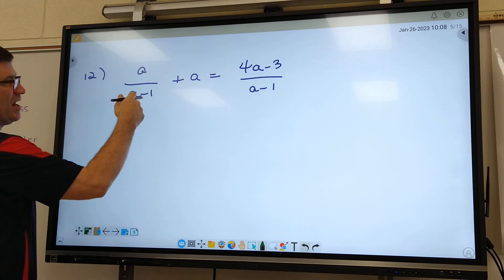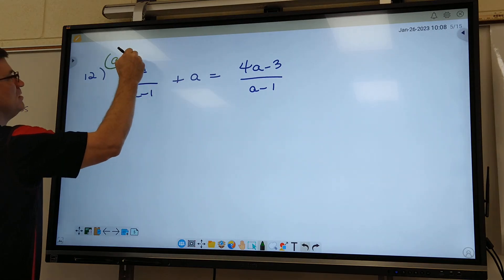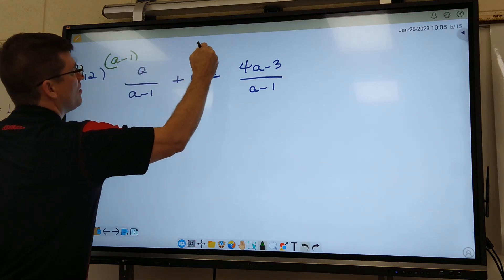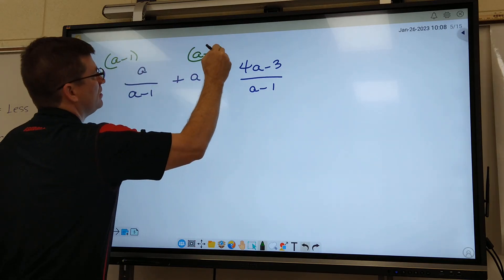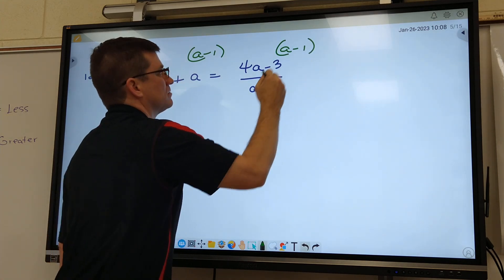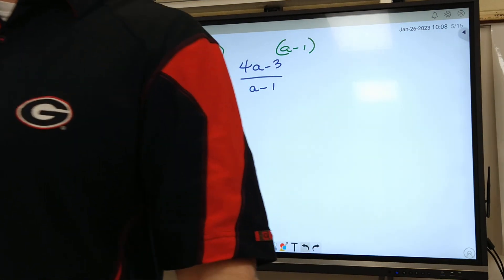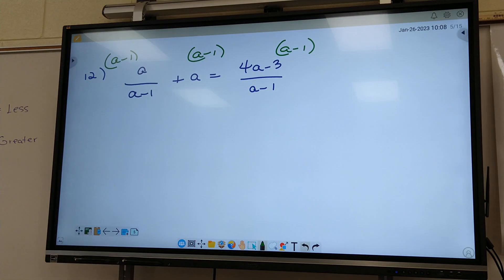Well, you got a minus 1 on the bottom on both of them. So a minus 1, a minus 1, and a minus 1. Look at all the bottoms of the fractions and use everything one time each for your common denominator.